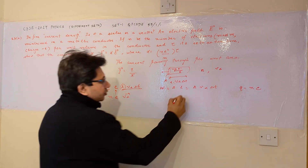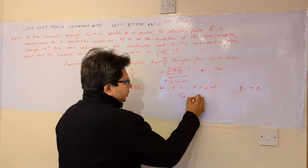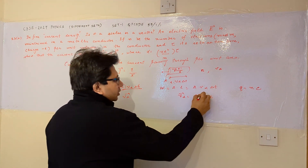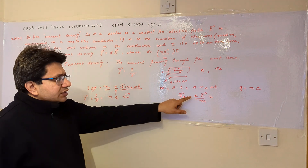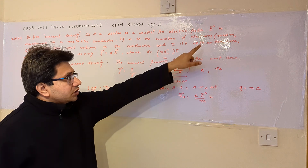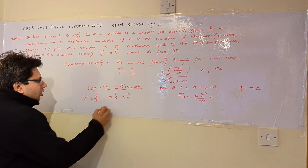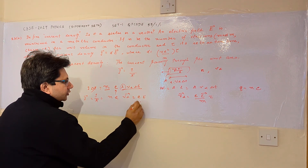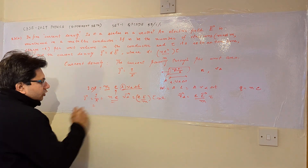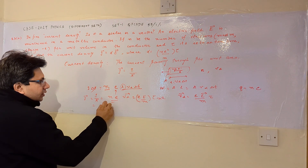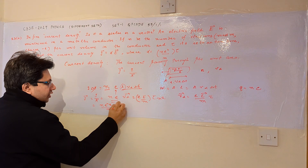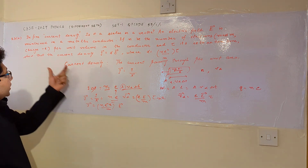We know the drift velocity vd equals e·E·τ divided by m, where e is the charge of an electron, E is the electric field, τ is the relaxation time, and m is the mass — all given in the problem. Substituting vd into j = n·e·vd gives j equals n·e²·E·τ divided by m.